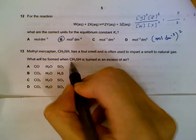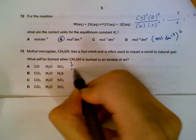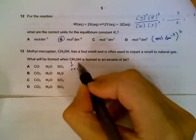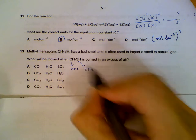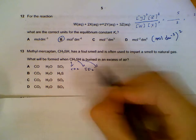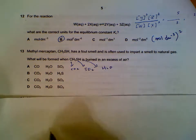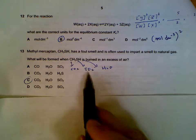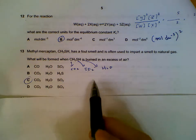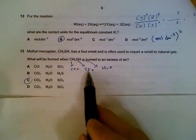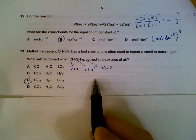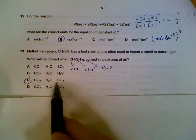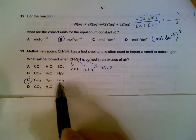Question 13: What happens when we burn CH₃SH in excess air? Carbon becomes CO₂, sulfur becomes SO₂, and hydrogen becomes water. Sulfur dioxide might eventually become sulfur trioxide after oxidation in the atmosphere, but that will not happen immediately, so sulfur dioxide is the main product.